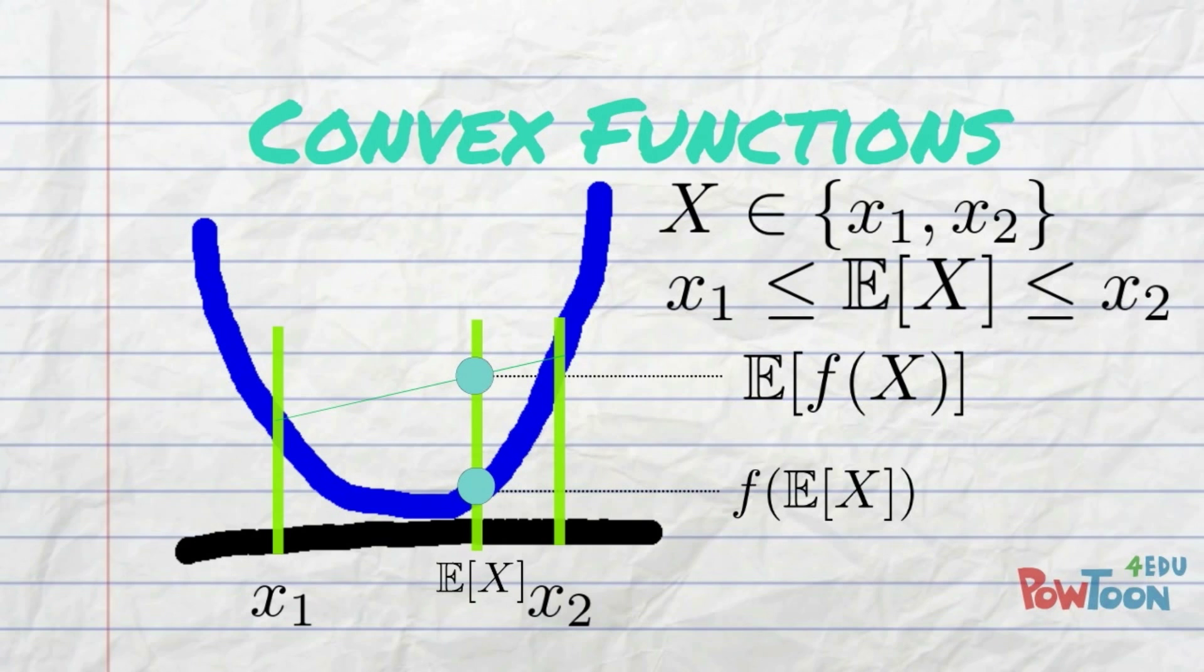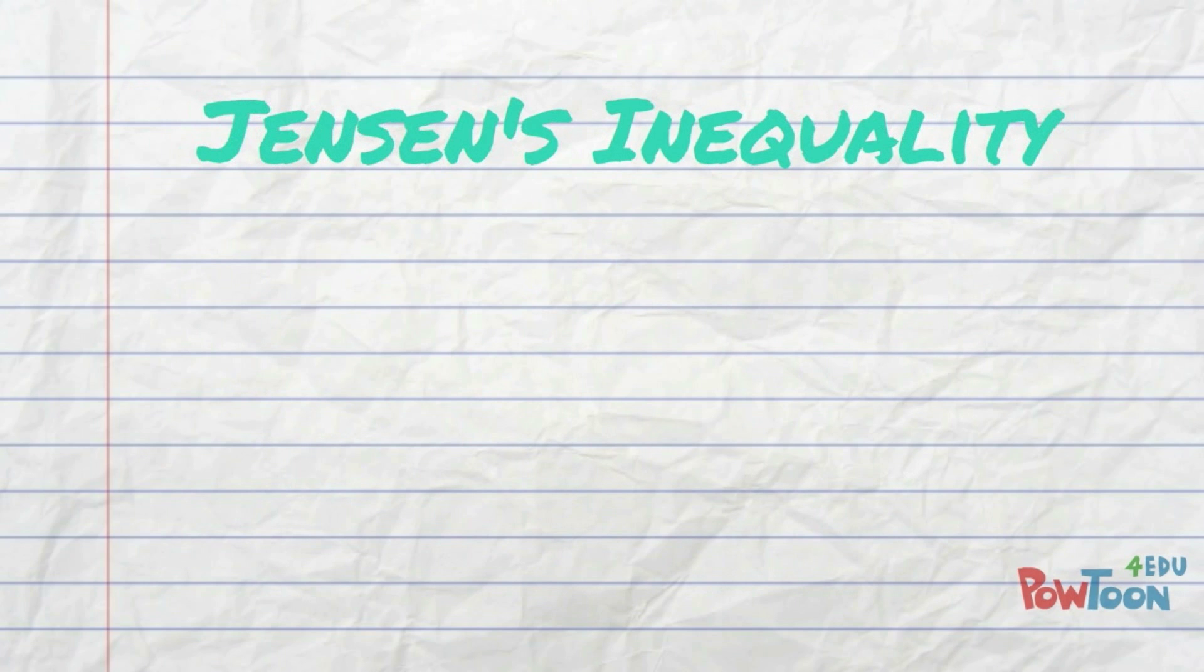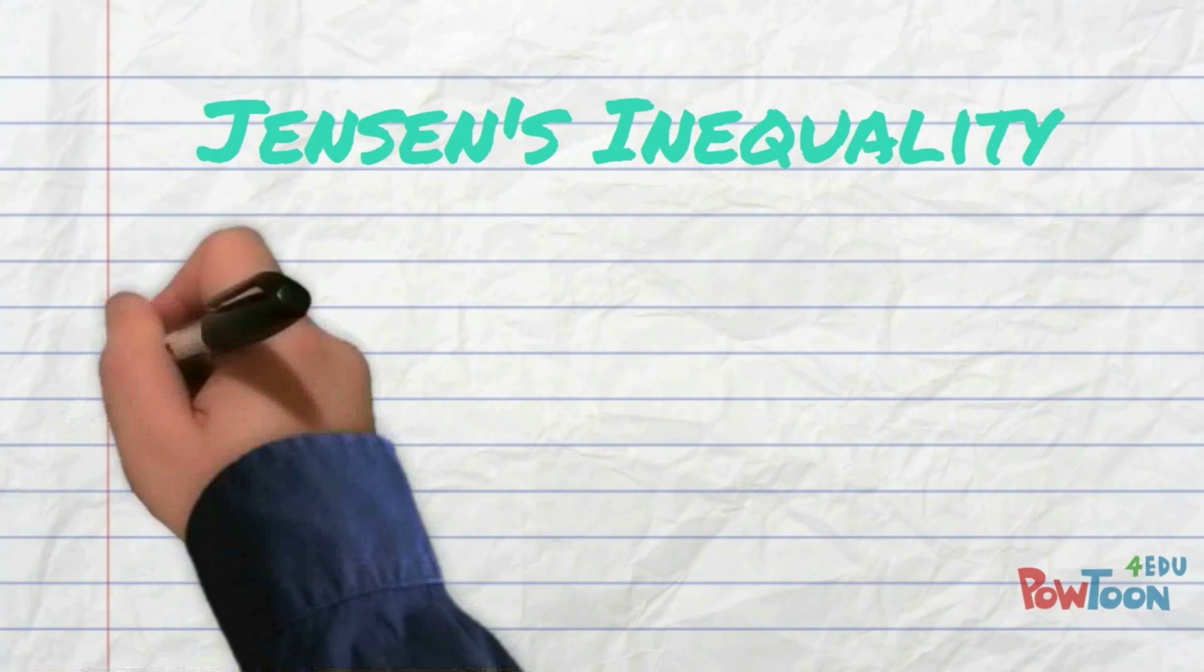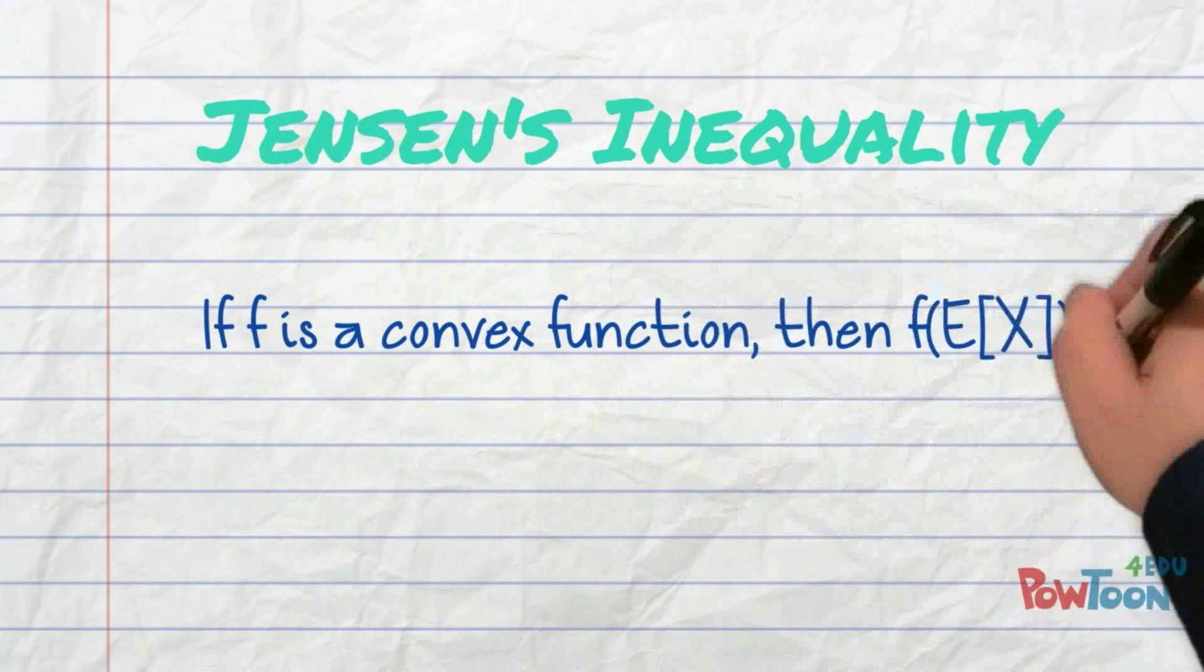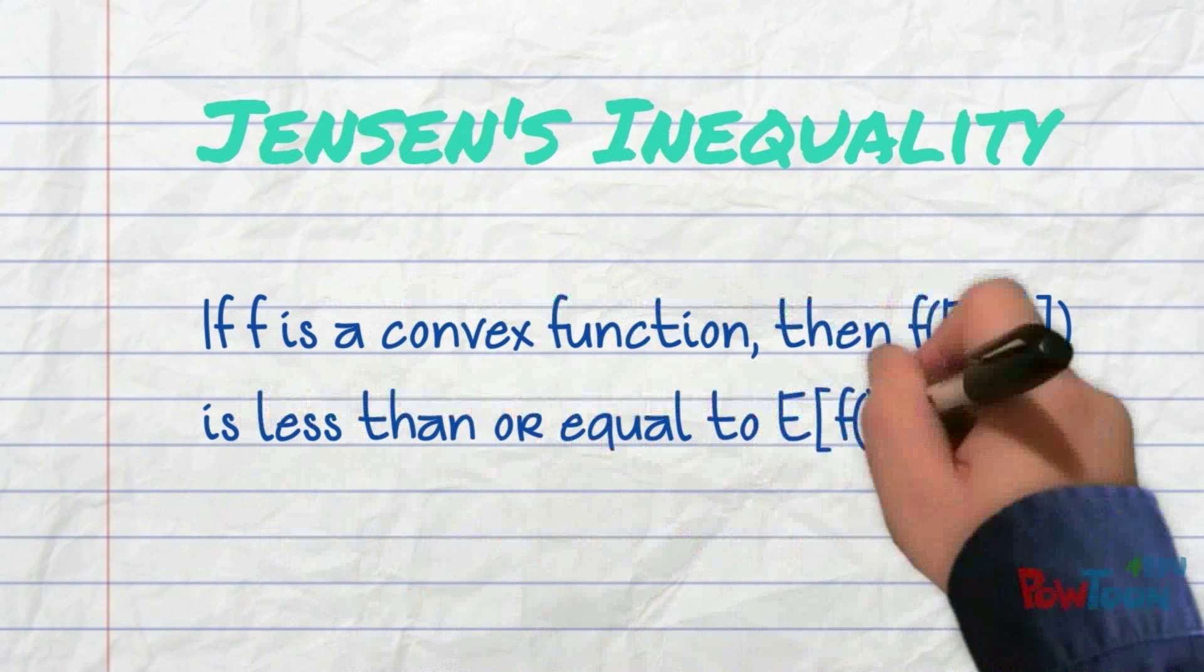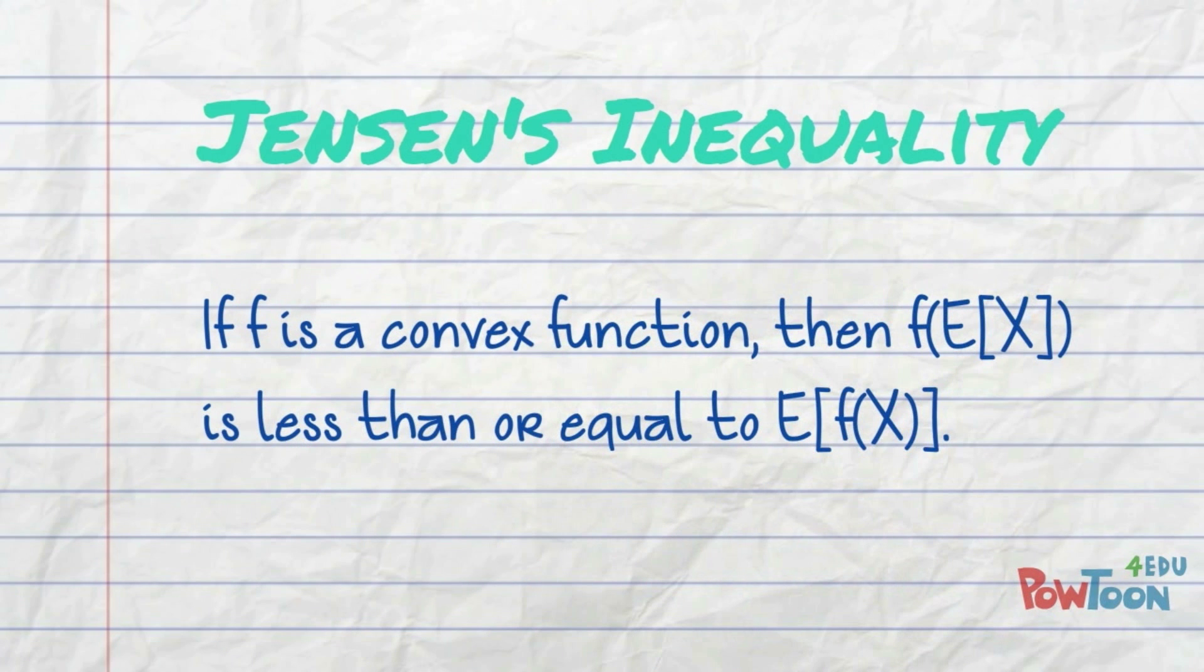And since the function is convex, we immediately know that f of the mean of x is less than or equal to the mean of f of x. In general, this is called Jensen's inequality. If f of x is a convex function, then f of the mean of x is less than or equal to the mean of f of x.